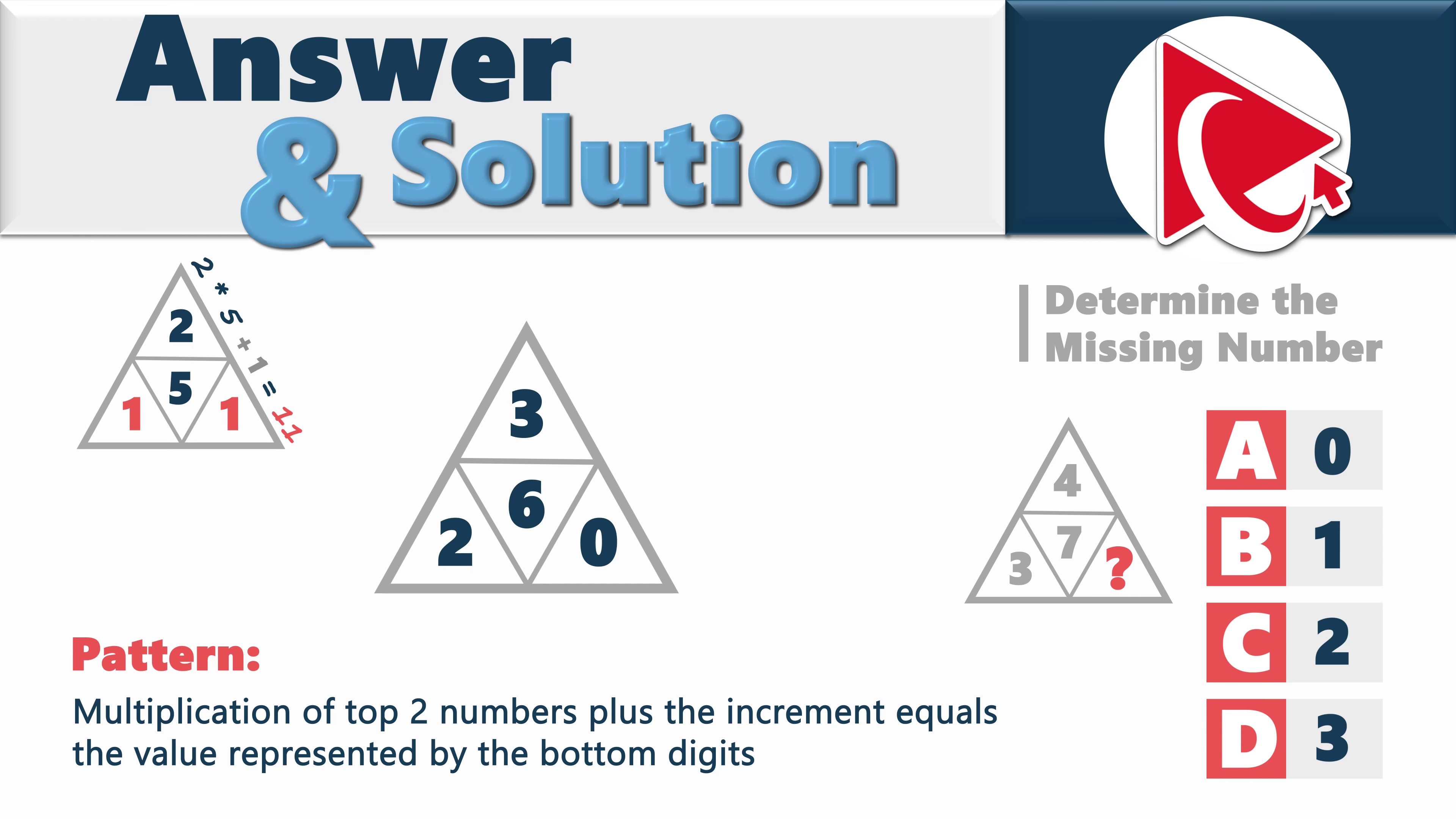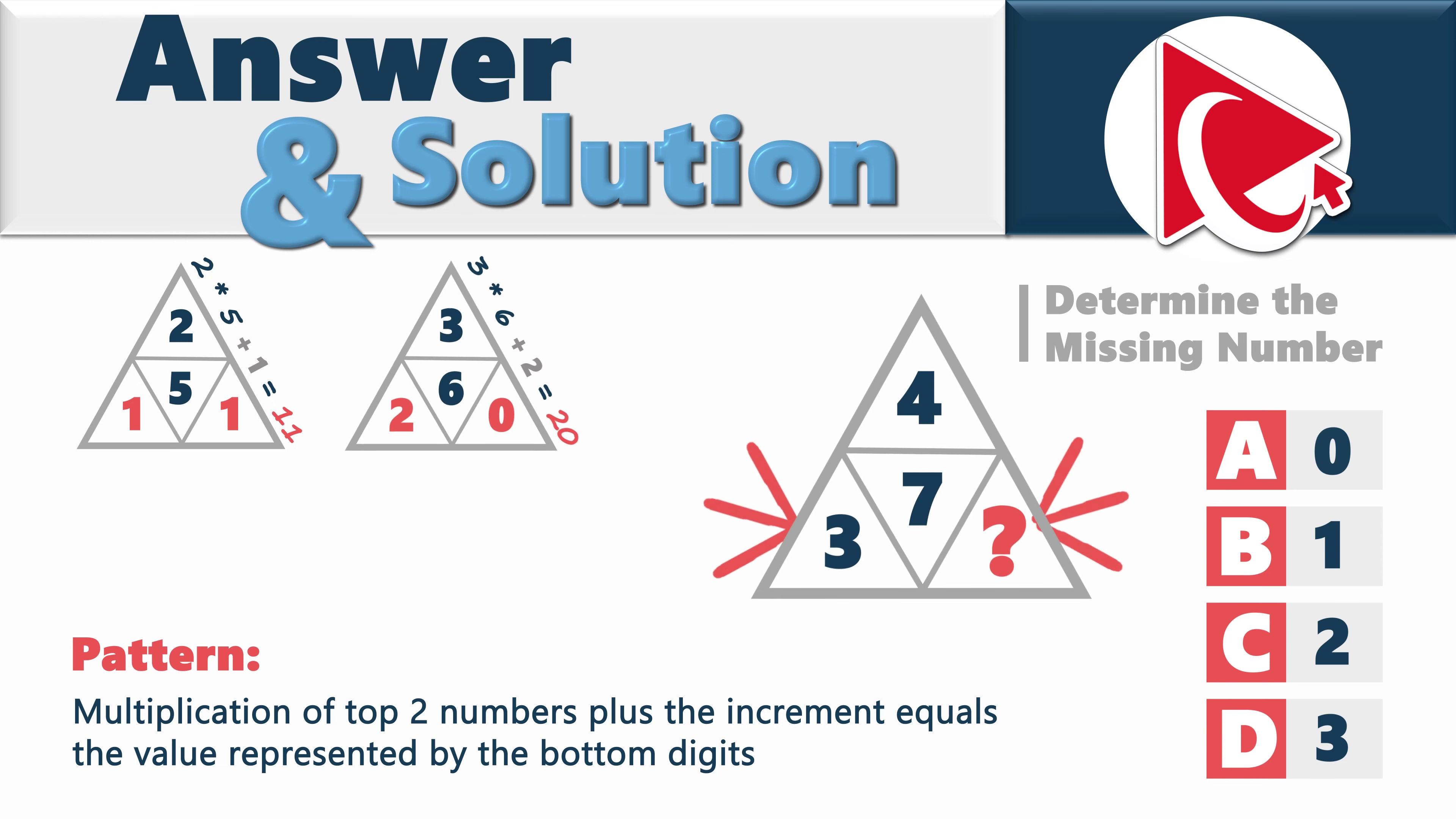In the second triangle, increment will be increasing, so instead of 1, it will be 2. 3 multiplied by 6 plus 2 equals 20. So the missing number can be calculated as 4 multiplied by 7 plus 3 equals 31. So the missing number is 1, and the correct answer here is choice B, 1.